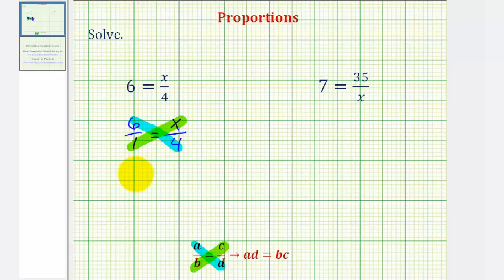Well, one times x is equal to x, and six times four is equal to 24, and we have our solution, x equals 24.